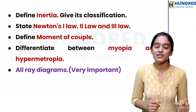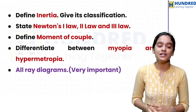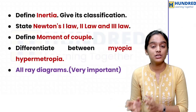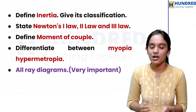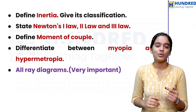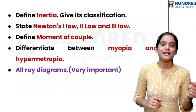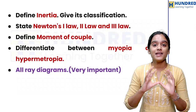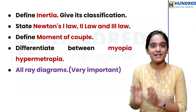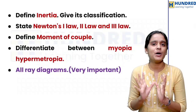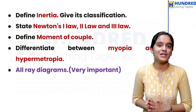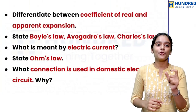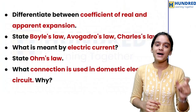First, define inertia and give its classification. Second question: state Newton's laws — first law, second law, third law. Third: define moment of couple. Fourth: differentiate between myopia and hypermetropia. Next, all the diagrams — eight diagrams that repeat every year. And differentiate between coefficient of real and apparent expansion.